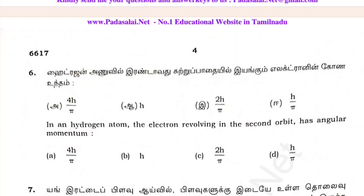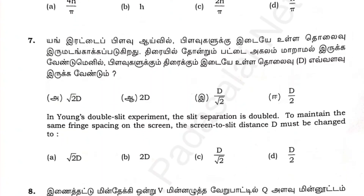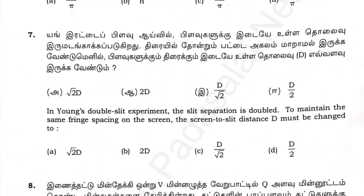The nitrogen atom — the electron revolving in the second orbit has angular momentum. This is question 7. In the double slit experiment, the slit separation is doubled. To maintain the same fringe width on the screen, the screen-to-slit distance D must be changed.